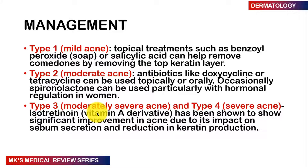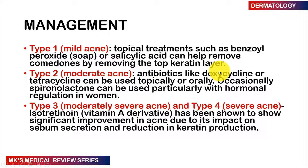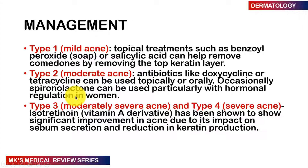Management depends on the stage. For type 1 mild acne, topical treatments such as benzoyl peroxide soap or salicylic acid can remove comedones by removing the top keratin layer. For type 2 moderate acne, antibiotics such as doxycycline or tetracycline can be used topically or orally. Spironolactone can also be used, particularly in women with hormonal dysregulation — though in men it may lead to gynecomastia, the growth of breast tissue.